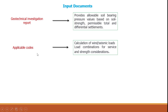The second important input is the applicable codes. Every analysis and design must be based on applicable codes, which allow you to compute important loads such as wind and seismic loads, and to formulate load combinations for both service and strength considerations.